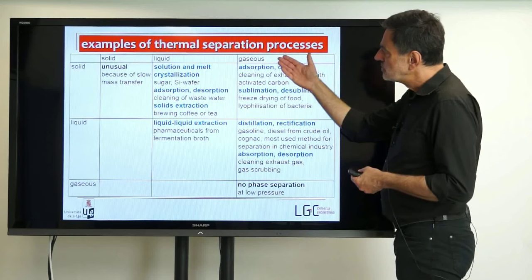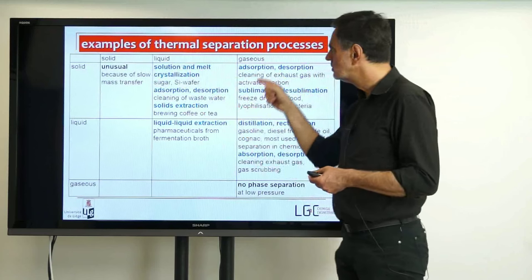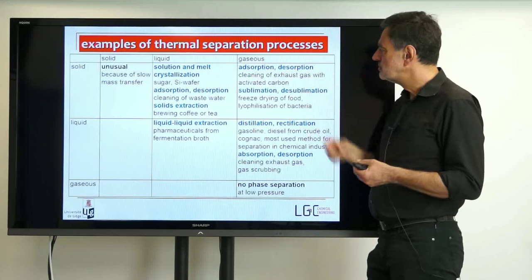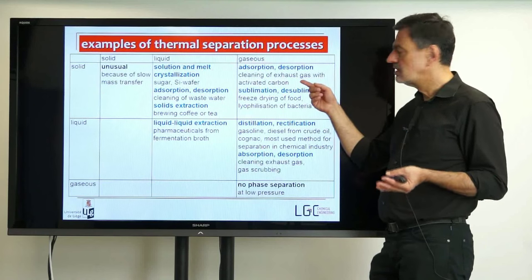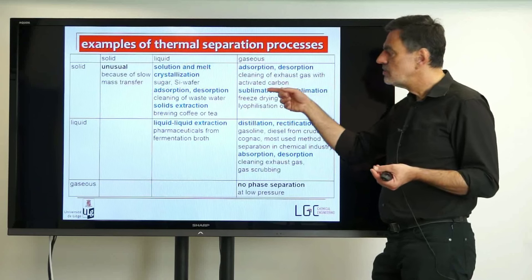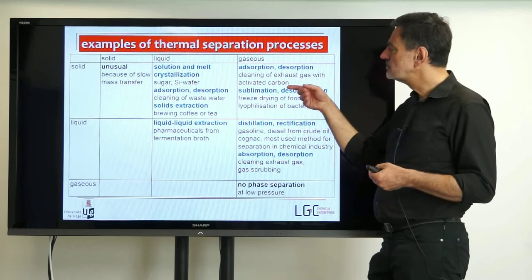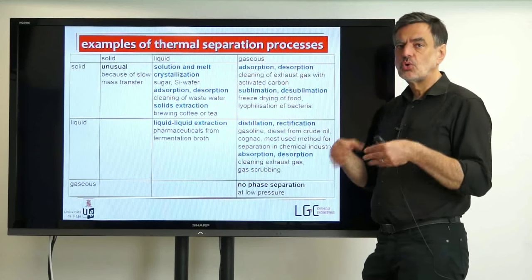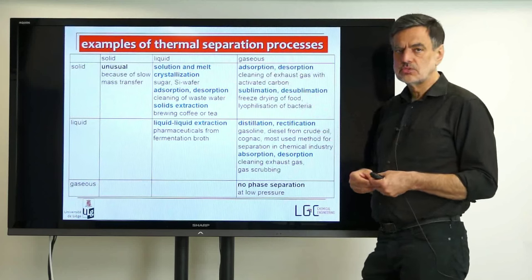The next combination is gas and solid — again adsorption, which applies not only to liquid in contact with a solid but also for a gas in contact with a solid. You can adsorb detrimental components from exhaust gas using activated carbon, for example. Adsorption can also be used for analytical purposes: gas chromatography uses the adsorption of components from the gas to a solid and then desorption a moment later, and the combination of these two can be used analytically.